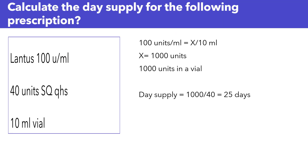Calculate the day supply for the following prescription. We have Lentis 100 units per ml, 40 units sub-Q at bedtime, and you're dispensing a 10 ml vial.